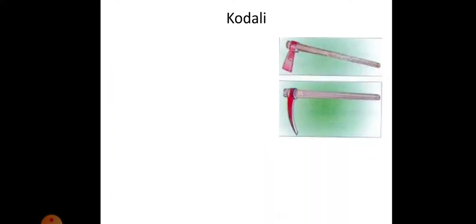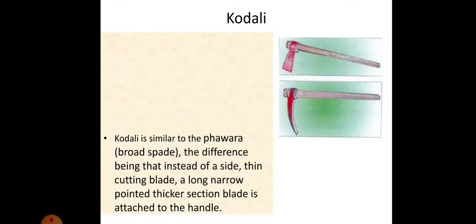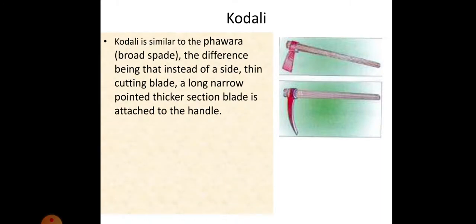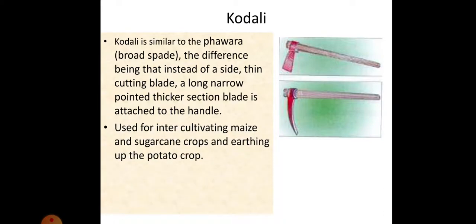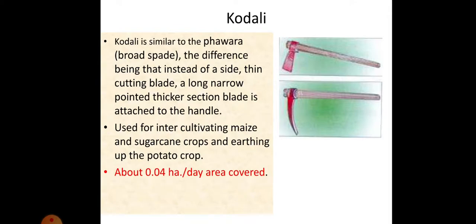Kudari: it is similar to the phavra or spade, the difference being that instead of a side thin cutting blade, a long narrow pointed thicker section blade is attached to the handle. It is used for inter-cultivating maize and sugarcane crops and earthing up the potato crop. Area covered is about 0.04 hectare per day.